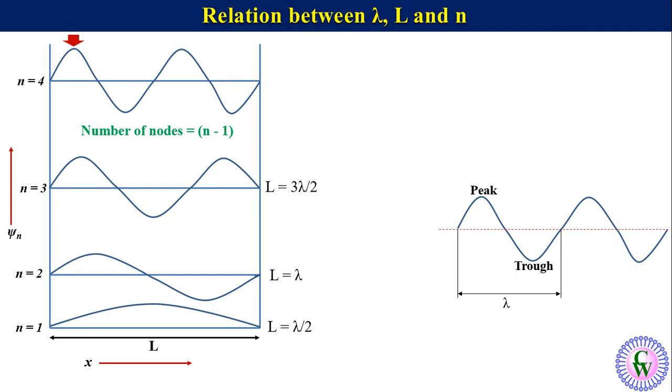For n equals 4, there are two peaks and two troughs, so L equals 2 lambda.